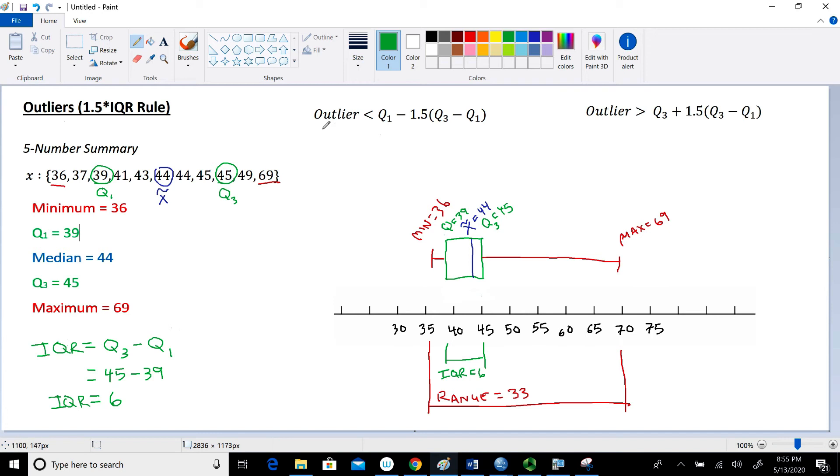We determine if there's outliers on the left side of the data set by taking Q1 and subtracting 1.5 times Q3 minus Q1. Now recall, Q3 minus Q1 is actually the IQR. That's where this rule gets its name from, the 1.5 times the IQR rule.